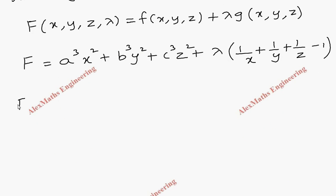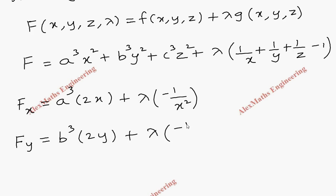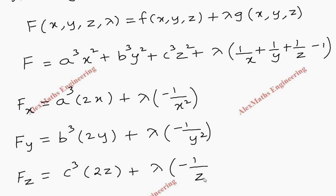Now we find the partial derivatives. With respect to x: 2a³x + λ(−1/x²). With respect to y: 2b³y + λ(−1/y²). With respect to z: 2c³z + λ(−1/z²). When doing partial differentiation with respect to one variable, the other variables are treated as constants.